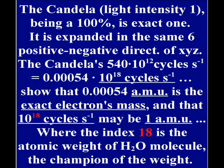The candela, light intensity 1, is a whole, and it is exact 1, as all the percentage. It is expanded in the same 6th positive and negative direction of the Cartesian term. The candela can be represented also in a different size, and so we have the exact electron mass.